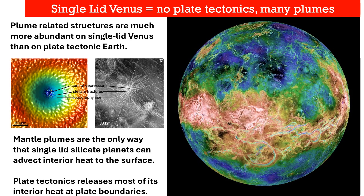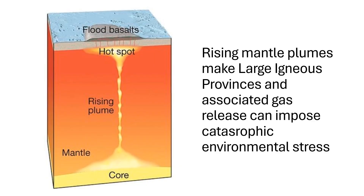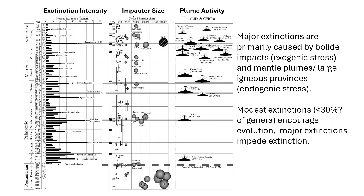Evolution on a single lid planet like Venus should be slower because the endogenic processes causing environmental pressures are either much weaker or much stronger than those associated with plate tectonics. Changes in configurations of continents, ocean basins, and habitats are minor, but catastrophic changes can accompany mantle plumes. Mantle plumes are much more important for advecting interior heat to the surface of single lid planets like Venus than they are on plate tectonic planets like modern Earth. Plumes impose much stronger environmental stress than most other endogenic planetary processes, especially their voluminous eruptions on first reaching the surface to form large igneous provinces.